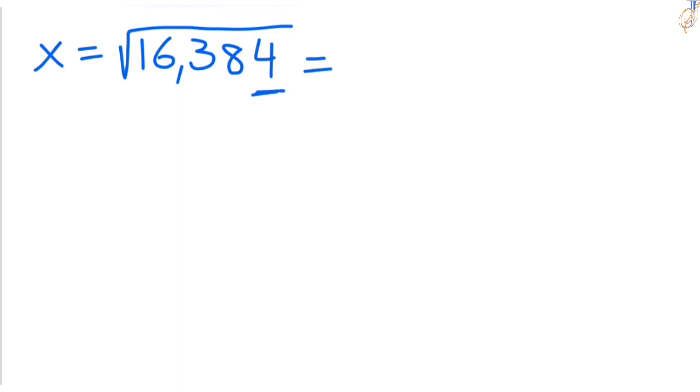Look at the unit digit which is 4. The square root can end with either 2 or 8. 2 square equals 4 and 8 square equals 64. So the unit digit can end with either 2 or 8.